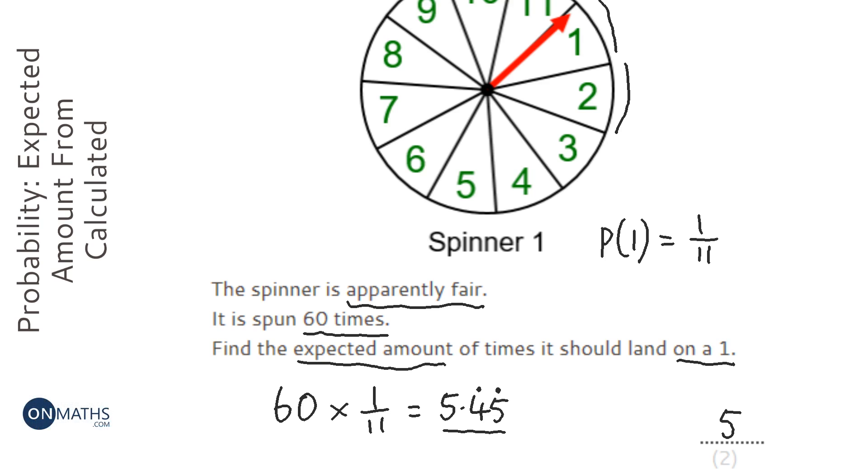In the exam they normally give you a range of numbers, so you're normally fine if you round up or round down. But make sure that it's a whole number, because you can't get 5.45 1s, you can only get 5 or 6.